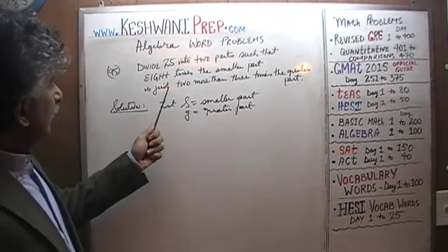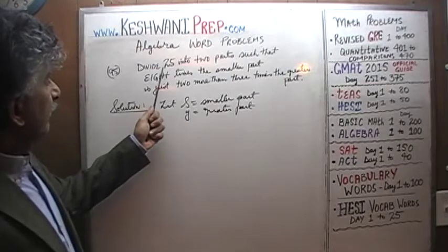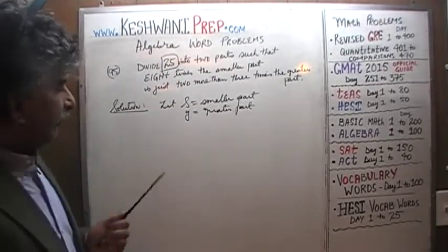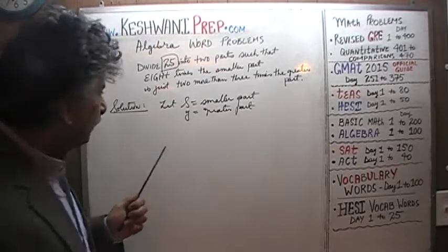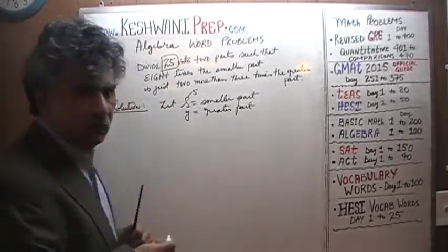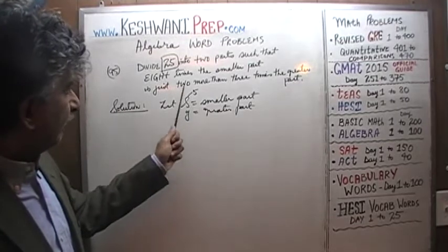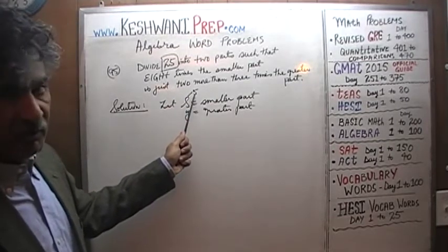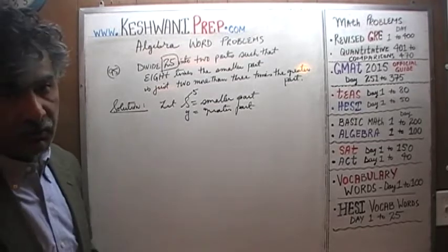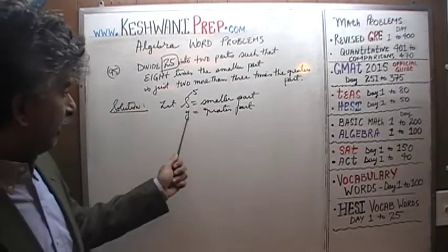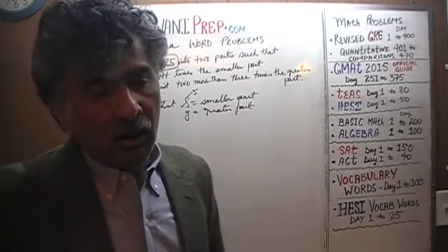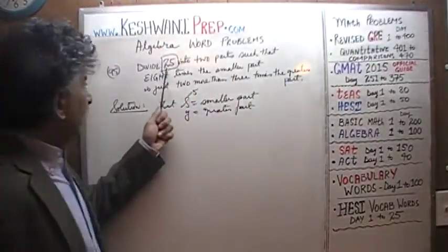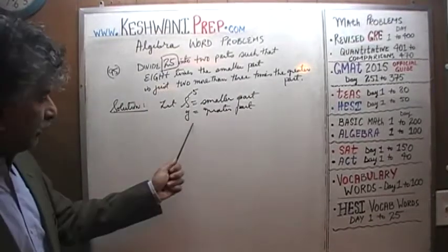Since we are told that we have to divide 25 into 2 parts, let's say, for example, the smaller part happens to be 5. If you divide 25 into 2 parts where the smaller part happens to be 5, how would you find the greater part? The greater part would be 20 — which is 25 minus 5. So 25 minus the smaller part will give you the greater part.